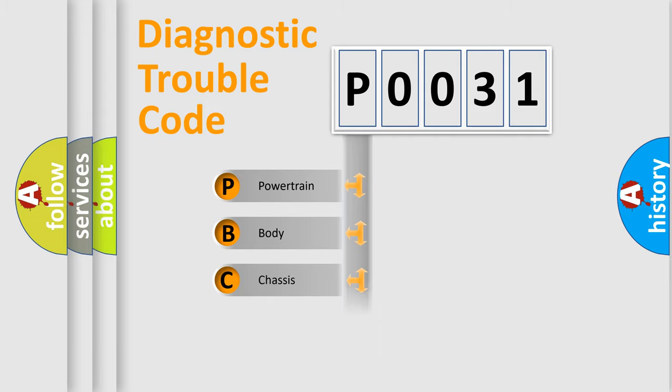Powertrain, Body, Chassis, Network. This distribution is defined in the first character code.